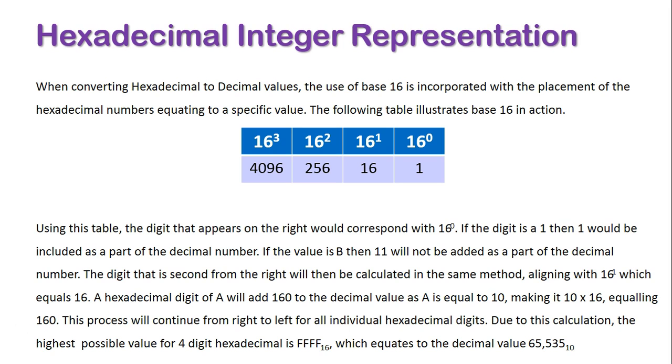The digit that is second from the right will then be calculated in the same method, aligning with 16 to the power of 1, which equals 16. A hexadecimal digit of A will add 160 to the decimal value as A is equal to 10, making it 10 times 16, equaling 160.